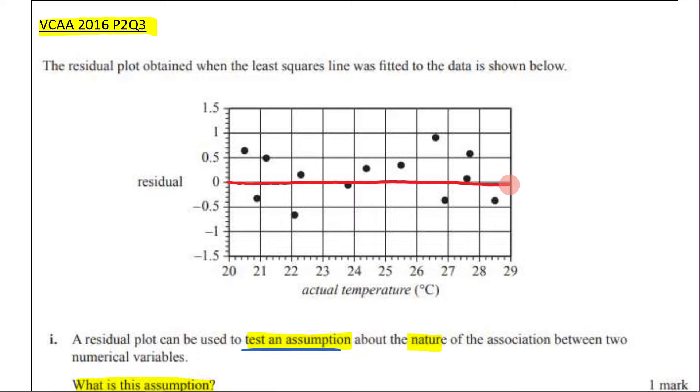Now, we need to ask ourselves the question, is there a clear pattern? And there clearly is no clear pattern here. There is no pattern to be seen. It is random. And the fact that it is random is telling us that it's most likely a linear association.